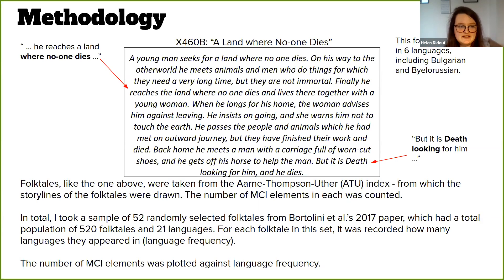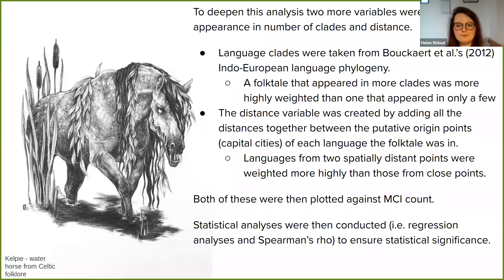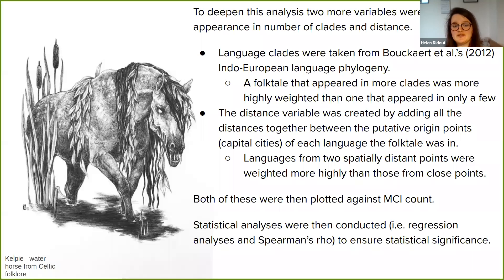This was done for all 52 folktales. However, this is quite a shallow analysis, so in an attempt to deepen it, I included two more variables: appearance in number of language clades, and distance. Language clades were drawn from Indo-European language phylogeny, including the Romance, Germanic, and Cyrillic languages. A folktale that appeared in more clades was more highly weighted than one that appeared in only a few. For example, a folktale appearing in two languages from two separate clades was more highly weighted than one appearing in two or three languages from the same clade.